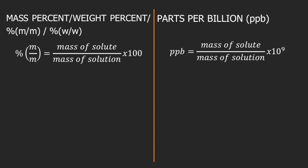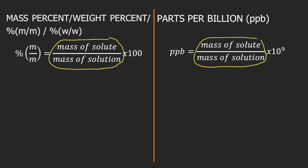Mass percent and parts per billion have similarity in their formula. Both have mass of solute divided by mass of solution. The only difference is that for mass percent you multiply by 100, and for PPB you multiply by 1 billion, or 10 to the 9.